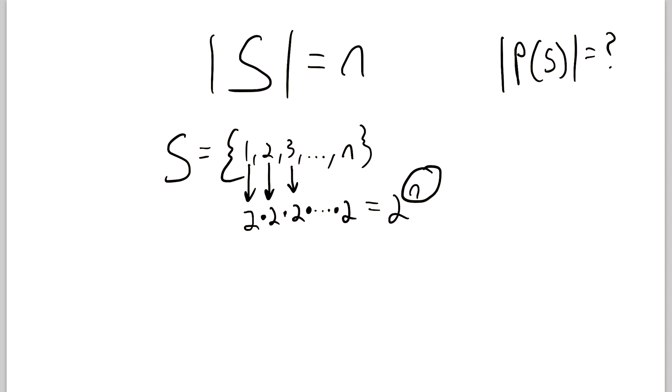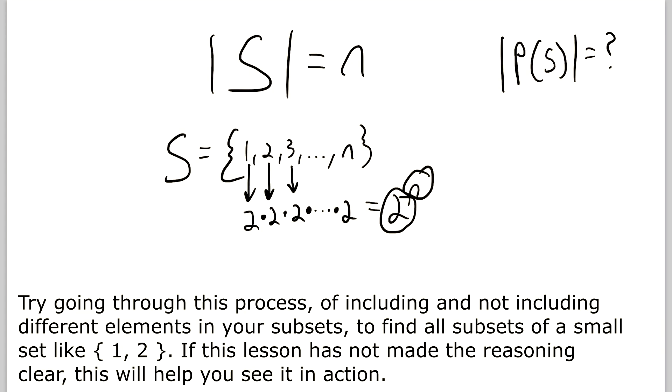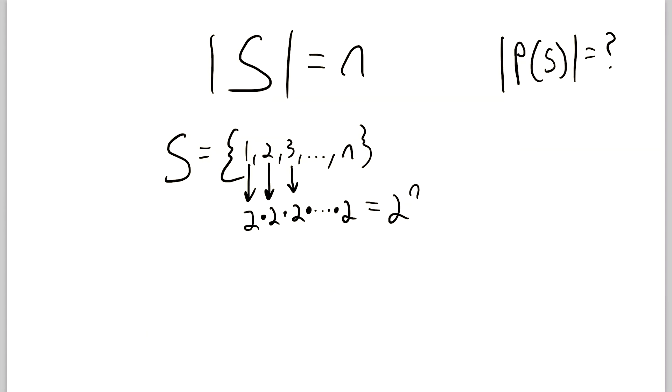Because for all n elements of S, we could either include or not include that element in our subset. So there are two possibilities for all n elements. So the total number of subsets is 2 to the power of n. And that's how we get that the cardinality of the power set of S has to be equal to 2 to the power of n. Where again, n is the number of elements in S. So that's why the formula is what it is.